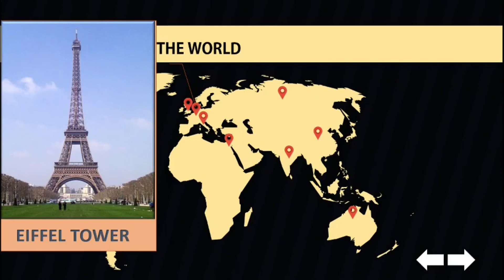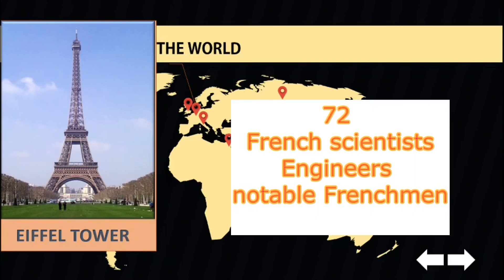Engineer Gustave Eiffel designed the Eiffel Tower, and it was originally submitted to Barcelona for the Universal Exposition in 1888. But to his dismay, it was rejected. When it was constructed, he engraved the names of 72 French scientists, engineers, and other notable Frenchmen.